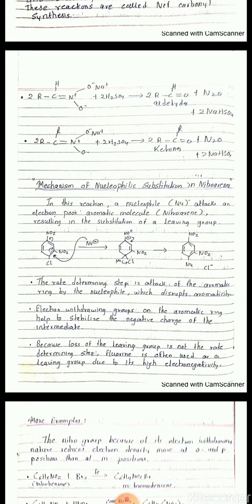In the examples of Nef carbonyl synthesis: 2RCHNO2 reacts with sulfuric acid and forms aldehydes plus N2O and 2NaHSO4 — here the primary nitro group converts into aldehydes. The secondary nitro compound reacts with sulfuric acid to form ketones along with N2O and NaHSO4.